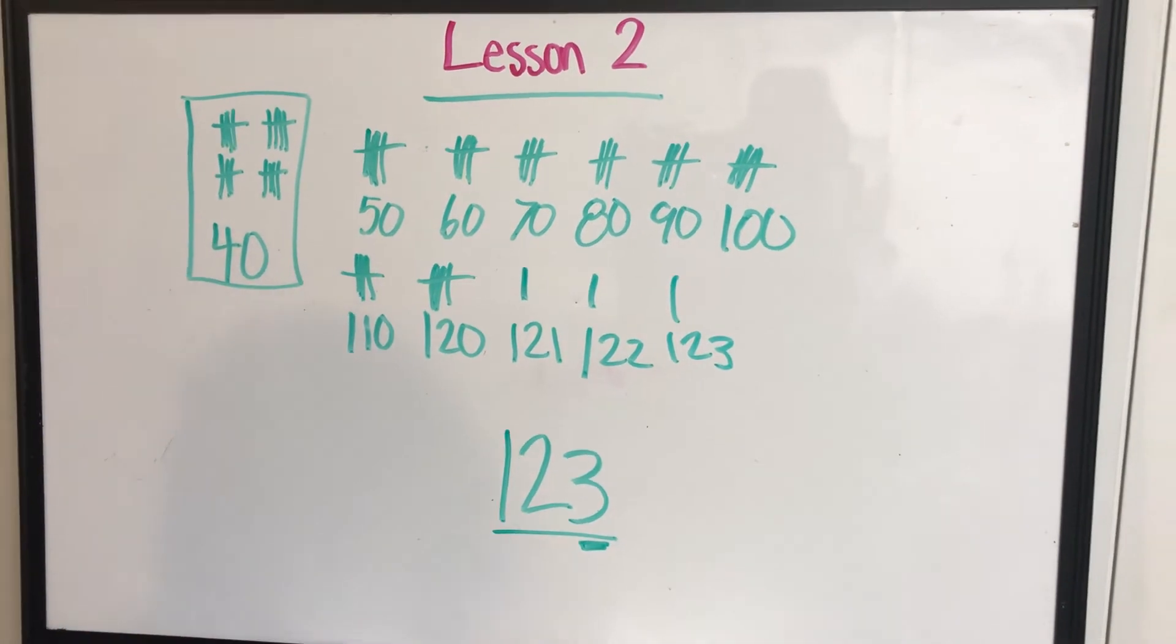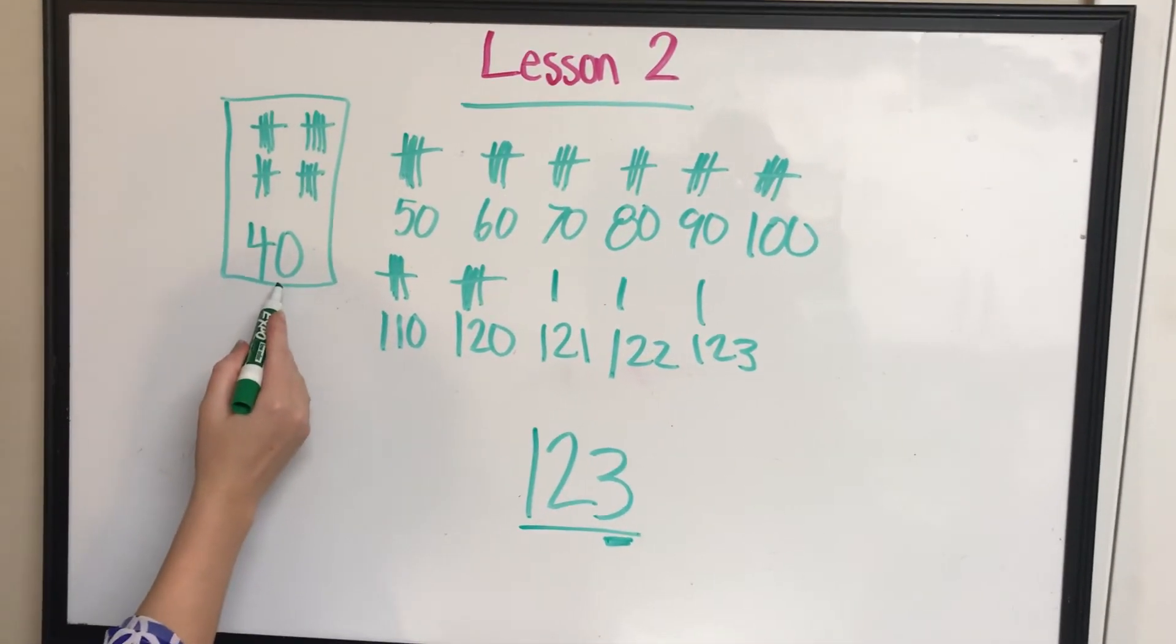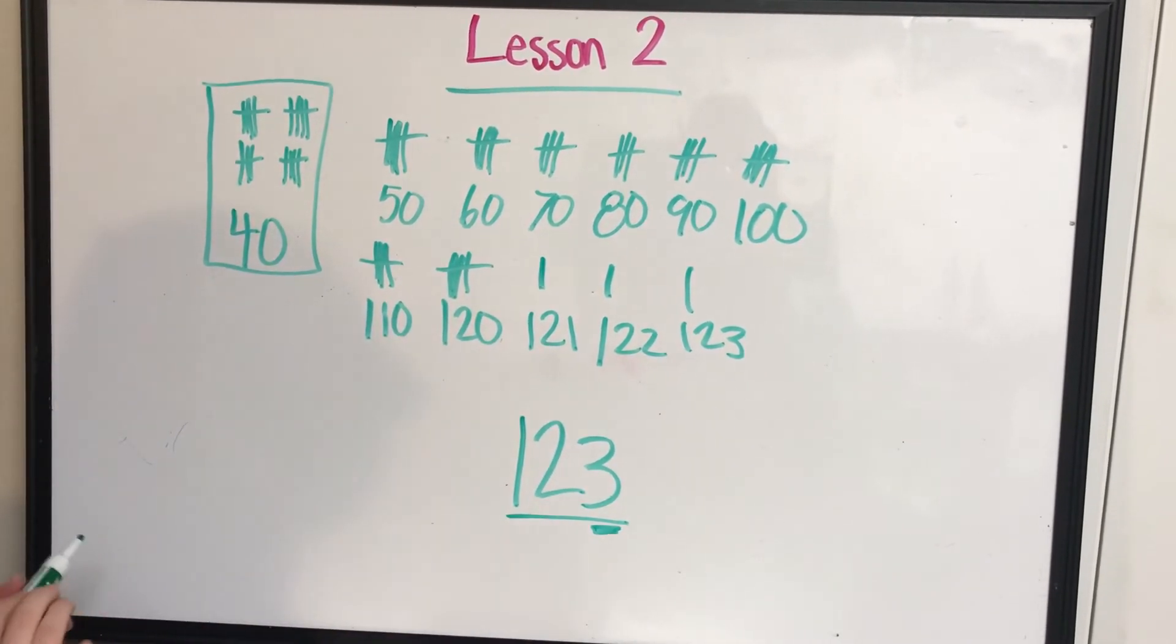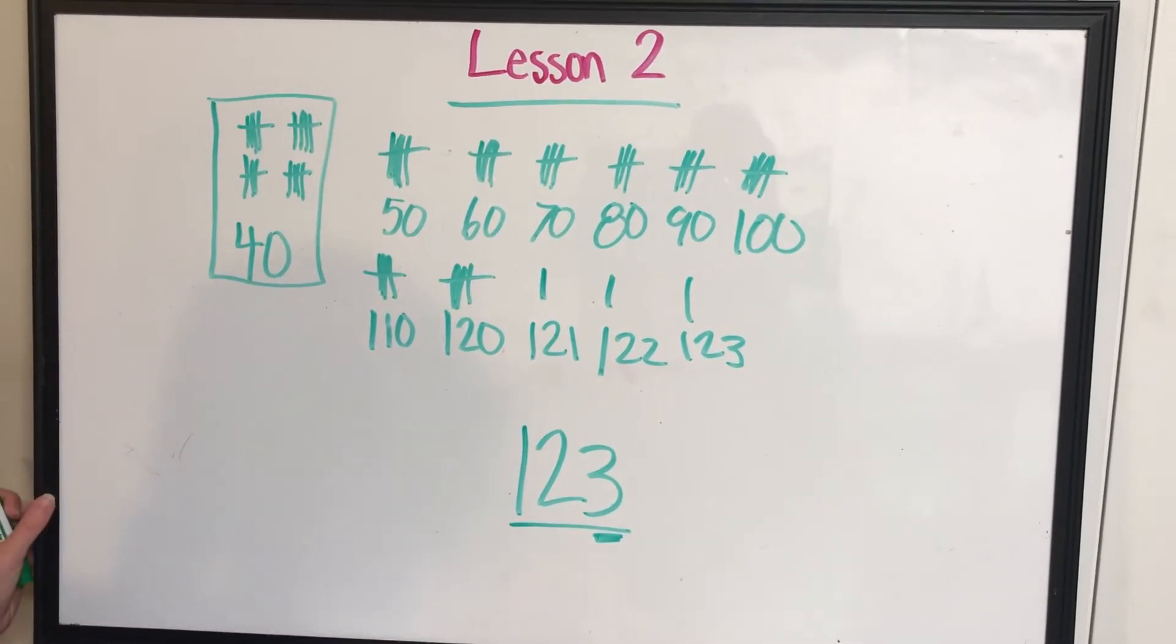This is what the student's problem should look like if you say draw, label, and box 40. And then use your pictures to count up to 123. If you'd like to pause here to write this down, you're more than welcome to.